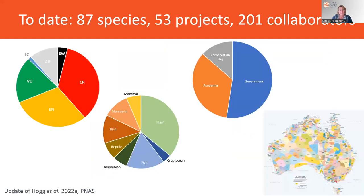As of August 2023, we have 87 species being supported through TSI projects across 53 projects and about 201 collaborators. As you can see from the pie charts, about a third of the species are critically endangered, endangered, or vulnerable. We have a couple of extinct-in-the-wild species and are supporting data generation for some data-deficient crustacean species. The representation of different taxa is largely proportioned towards plants, because there are approximately 1,400 plant species threatened in Australia compared to 500 fauna species. A large proportion of participants come from government agencies or conservation NGOs, with only about a third from academia — which is one of the reasons we developed this program.